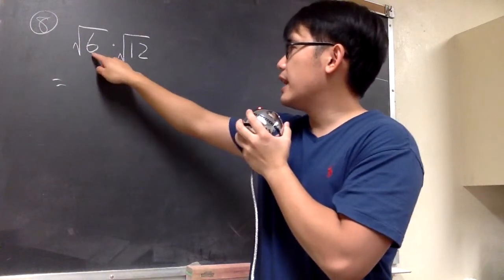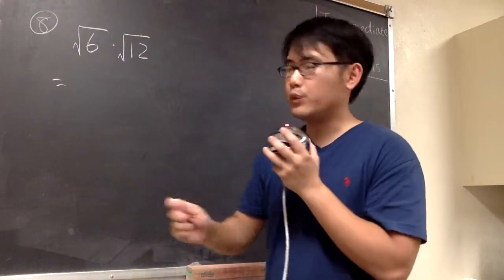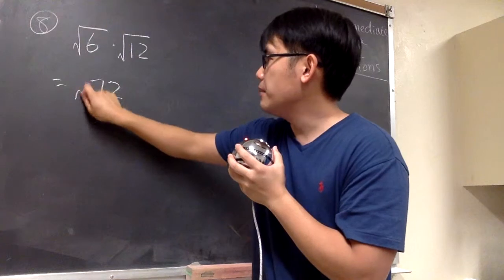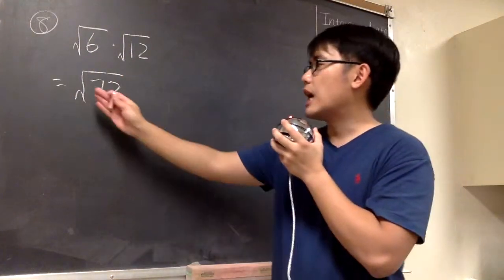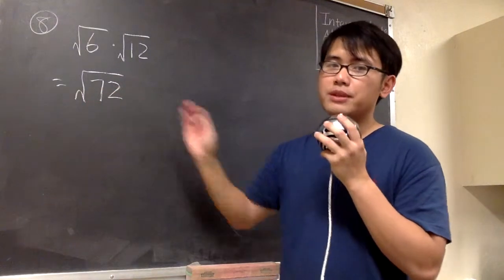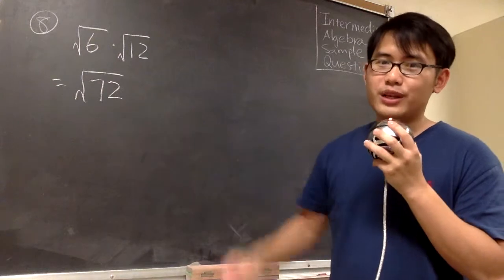In this case, we can just look at the 6 and the 12, and we multiply them together first and we will get 72. Then we maintain the square root, and now we just have to focus on how to simplify the square root of 72. Unfortunately, 72 is not a perfect square, so we don't know the answer right away.